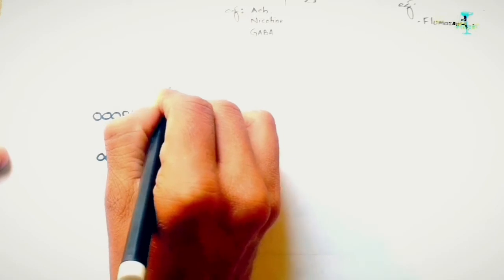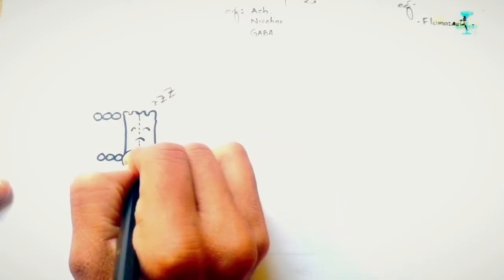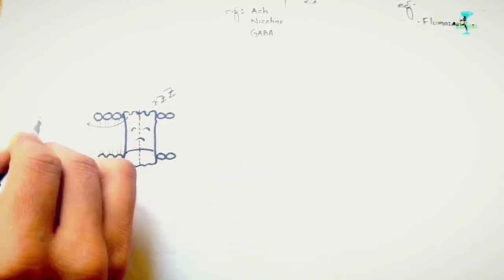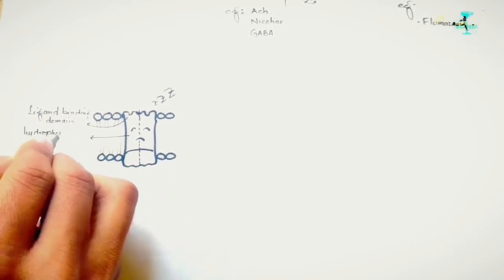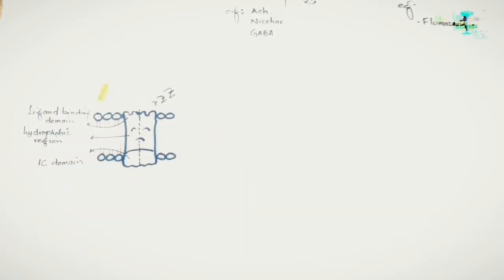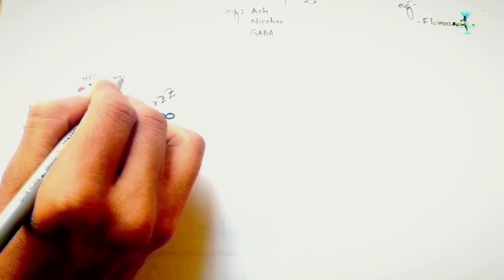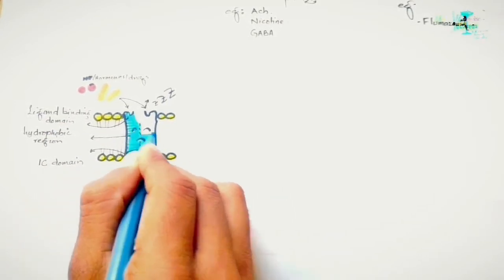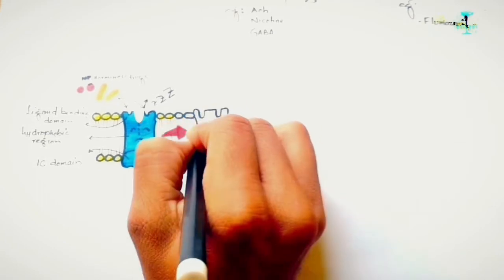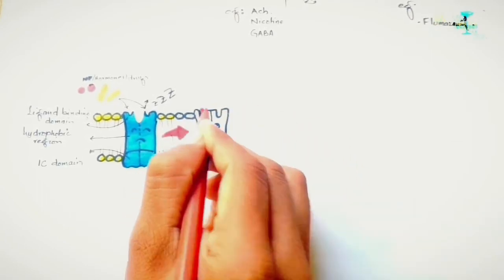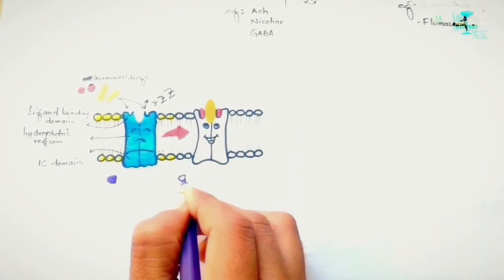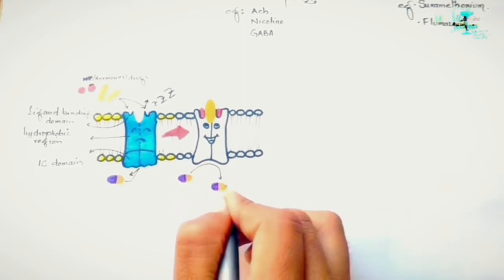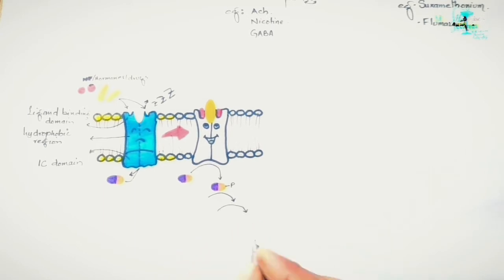The enzymes most commonly linked to these receptors are tyrosine kinases, which phosphorylate substances inside the cell. These receptors have three regions: the ligand-binding domain where ligands bind, a hydrophobic region, and an intracellular domain with cytosolic enzymatic activity. Upon binding of a ligand to the active site, the linked enzyme gets activated and, in the case of tyrosine kinase, phosphorylates substances inside the cell, triggering a cascade of reactions.